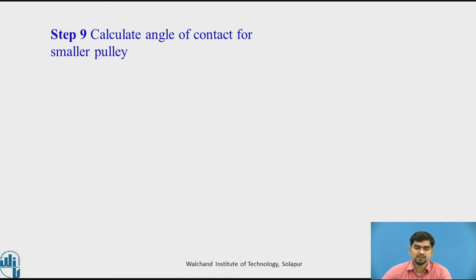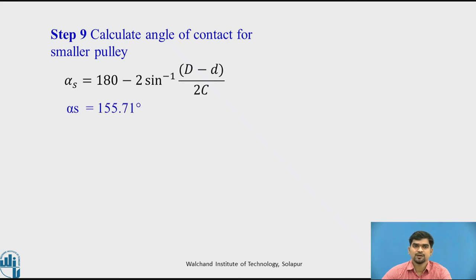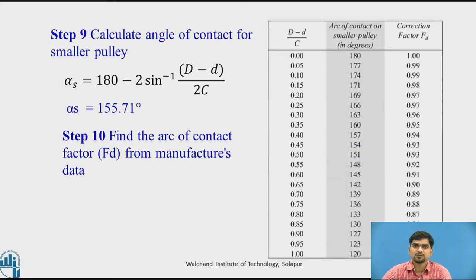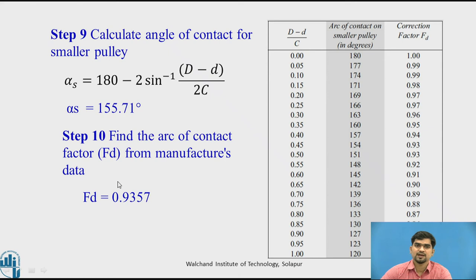Step 9: calculate the angle of contact for the smaller pulley, indicated by the letter alpha_s. We get alpha_s equal to 155.71 degrees. Step 10: find the arc of contact factor Fd from the manufacturing data. For alpha_s equal to 155.71 degrees, this falls between 154 and 157, giving a value between 0.93 and 0.94. Using interpolation, the value of Fd is 0.9357.